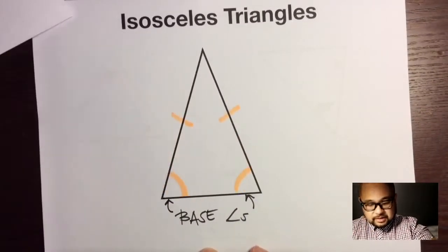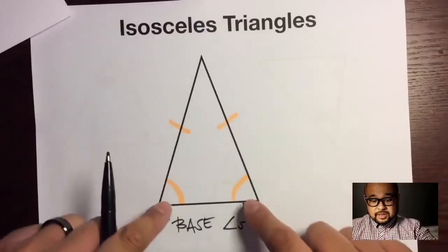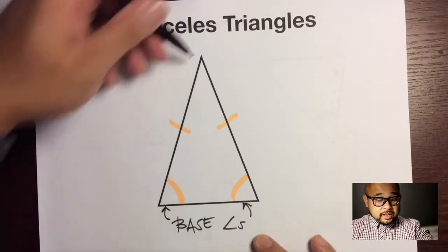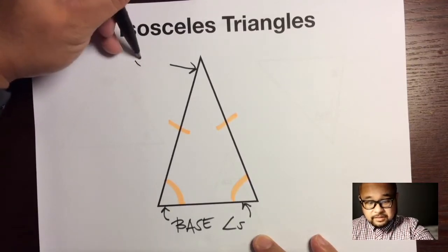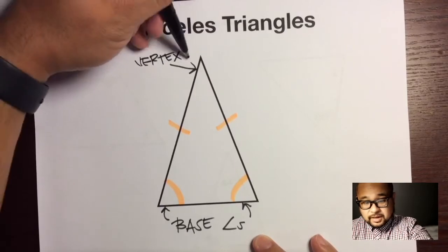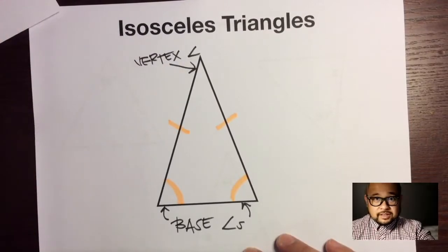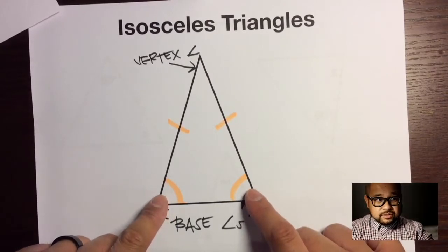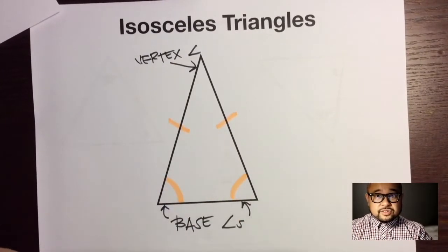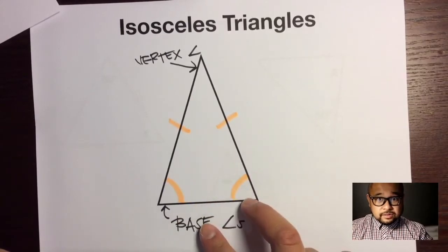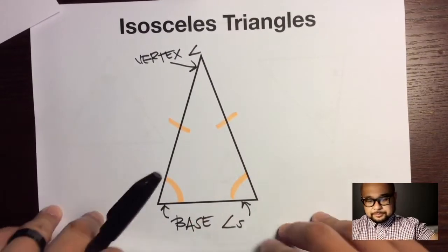If you follow these two congruent sides down, these two angles are congruent and they are called base angles — they sit on the base of the triangle. The angle in an isosceles triangle that isn't a base angle is called the vertex angle. So to recap: the vertex angle is the one angle not congruent to any other; the two congruent angles are the base angles; and the two congruent sides point to those base angles.